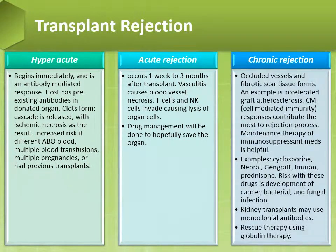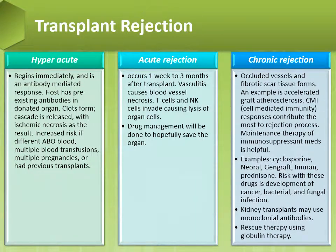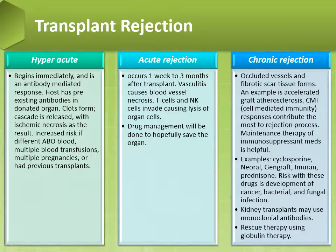Chronic rejection involves occluded vessels and fibrotic scar tissue formation — an example is accelerated graft atherosclerosis. Cell-mediated immunity responses contribute the most to the rejection process. Maintenance therapy with immunosuppressant medications such as cyclosporine is helpful. Kidney transplants may use monoclonal antibodies, and rescue therapy uses globulin therapy.